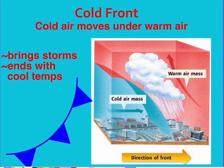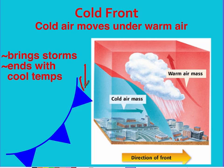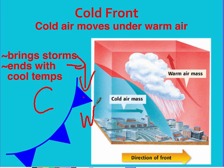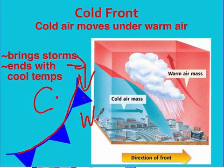With a cold front, the cold air mass is the stronger one, so it moves in. Cold air is denser, so it moves under the warm air, pushing and displacing it upward. This brings thunderstorms along with cooler temperatures following. Looking at the front symbol, the direction the triangles point shows which way the front is moving. So on one side is the cold air mass and on the other is the warm air mass. The cold air mass moves in, pushes the warm air mass up, brings thunderstorms, and then cooler weather.